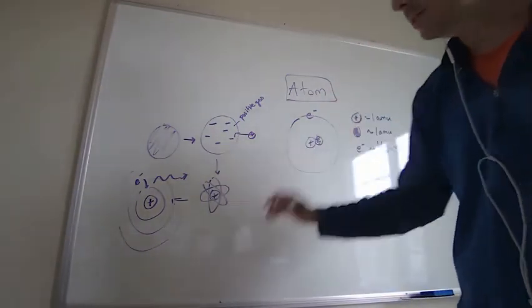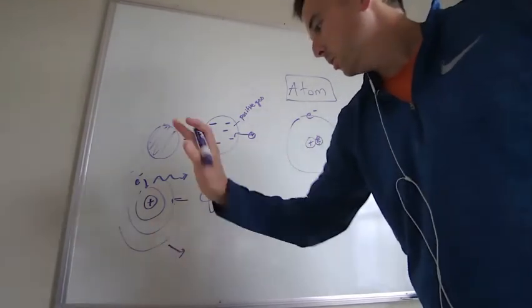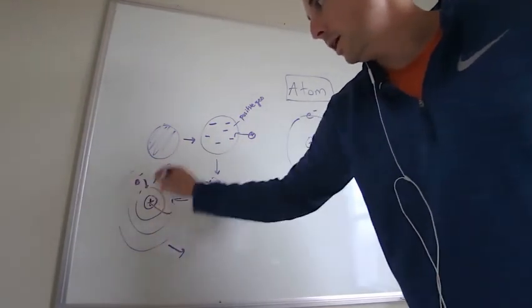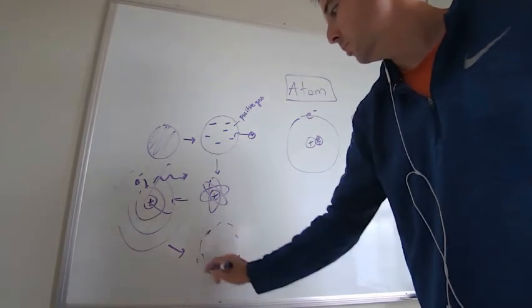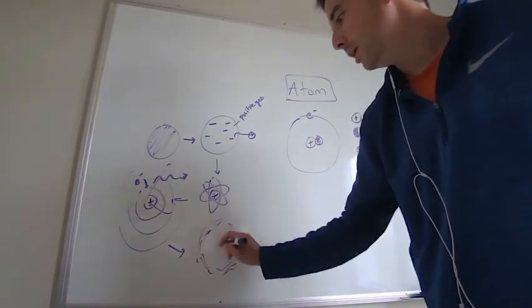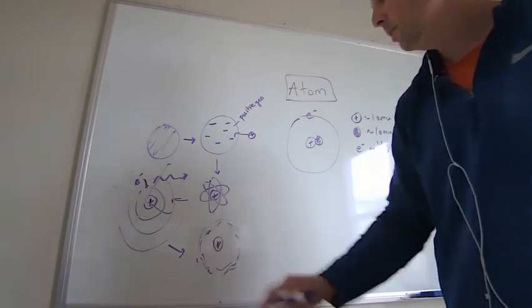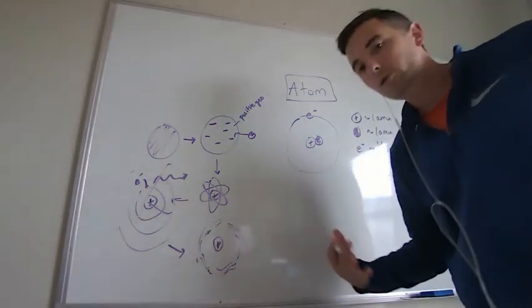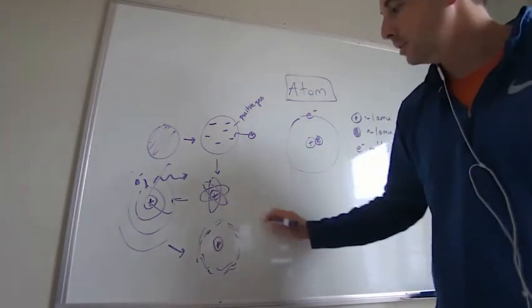Then we go to the quantum model and we say this actually can't happen. So really what do we have? We have some sort of orbit that's out there in probability land and we have some positive in the center. But skipping over Schrödinger and Heisenberg uncertainty principle and everything along those lines, we get to the discovery of the neutron.